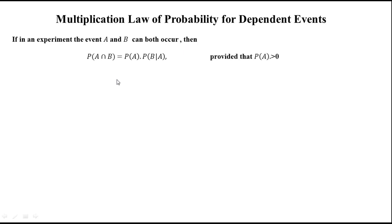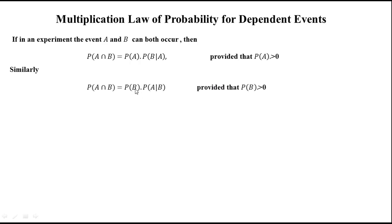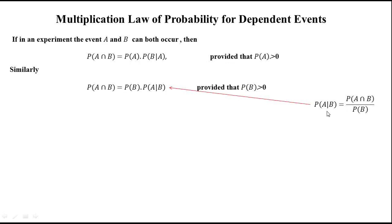Now we come to the multiplication law of probability for dependent events. If events A and B can both occur, then P(A∩B) = P(A) · P(B|A), provided P(A) > 0. Similarly, P(A∩B) = P(B) · P(A|B), provided P(B) > 0. These results are derived directly from the conditional probability formulas — simply multiply the denominator to the left side to obtain P(A∩B).